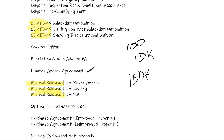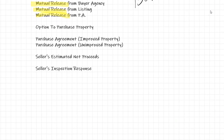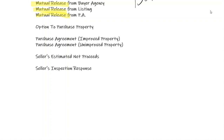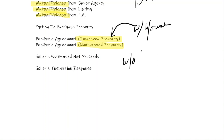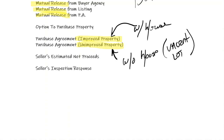The option — you guys remember what the only special thing about an option is? An option is the only unilateral contract we use in real estate, where only one person has to act. We also have two purchase agreements: an improved one with a house, and an unimproved one without a house — a better name for this could be vacant lot. We've got the seller's net proceeds, which a lot of listing agents use, and then the seller's inspection response.